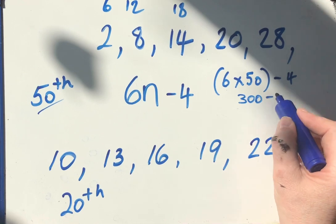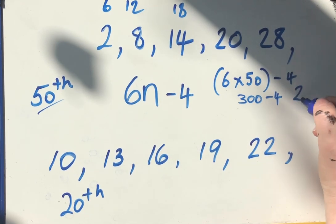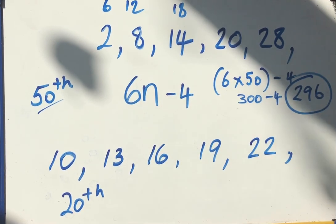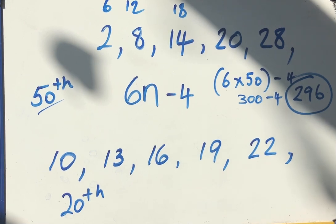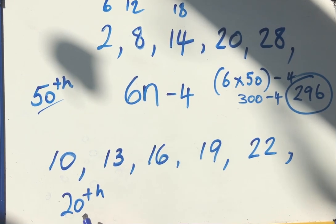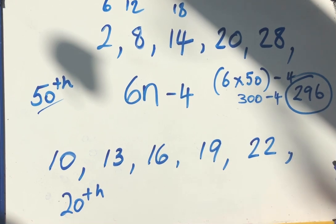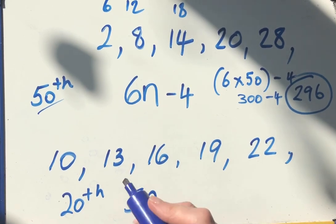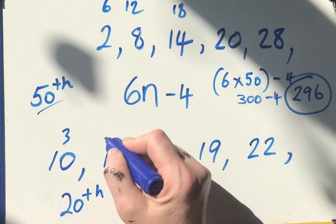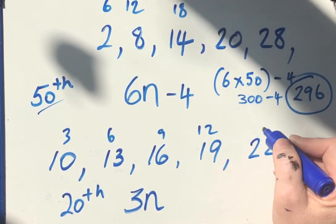Is 296. Hopefully you got that right. Here I wanted the 20th term. Well this sequence I'm adding three each time, so it is the three times table. But the three times table goes 3, 6, 9, 12, 15.